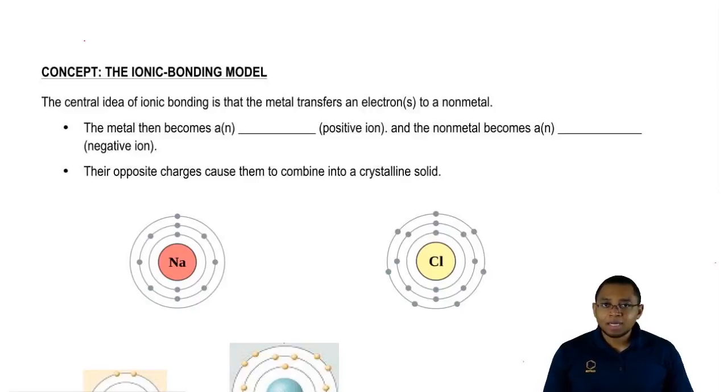Now, recall that ionic bonding just has to do with the transferring of an electron from one element to the other. We're going to say this transferring of electrons causes them to gain different charges and in chemistry opposites attract. The positive ion will be attracted to the negative ion and together they're going to form our compound.